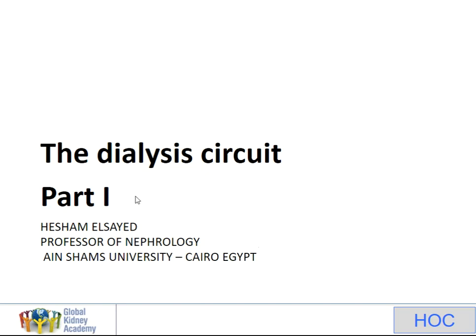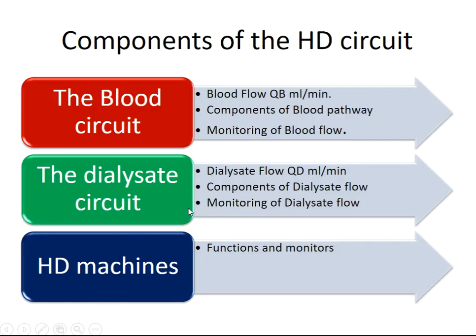The dialysis circuit, part one. We will discuss the components of the hemodialysis circuit: the blood circuit, the dialysis circuit, and the hemodialysis machines. In the blood circuit, we cover blood flow QP in milliliters per minute, the components of the blood pathway, and monitoring of blood flow pressure. In the dialysis circuit, we cover dialysis flow QD in milliliters per minute, components of the dialysis flow, and monitoring. Lastly, hemodialysis machines: important functions and monitors.